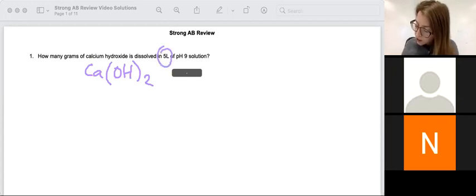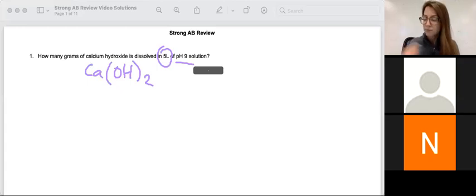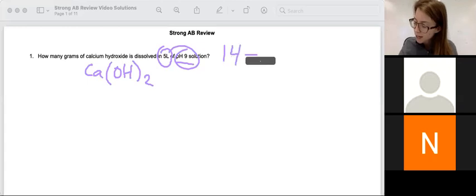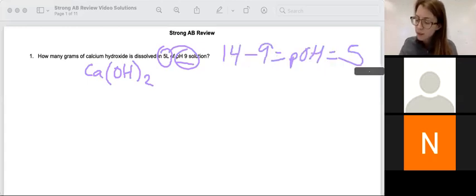We also know that we have five liters and pH nine. Now, pH nine tells me it's a base. Also, the fact that it's calcium hydroxide tells me it's a base. Since it's a base, pH is not that helpful. I'm going to start by taking 14 minus my pH to find my pOH, and that'll get me a pOH of five.